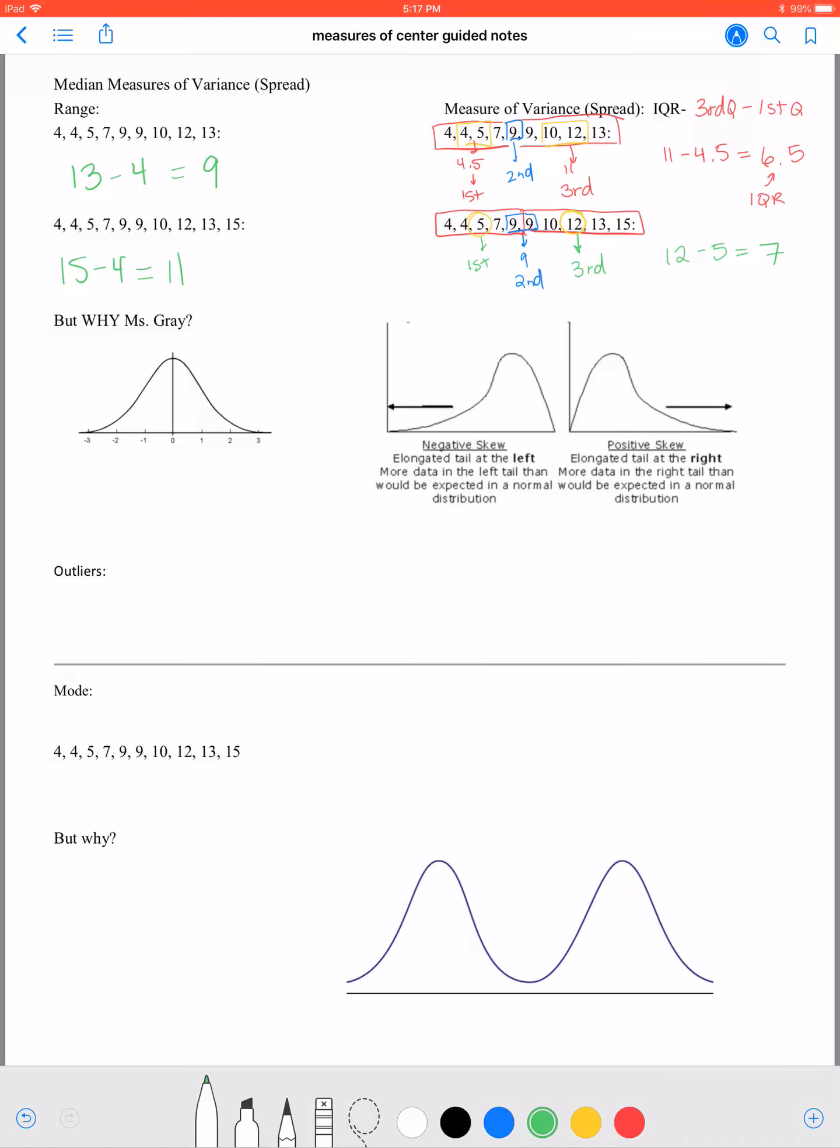When I'm calculating outliers with the median as my measure of center, the way we do that is we use the IQR. We take the first quartile and we subtract 1.5 times the IQR.